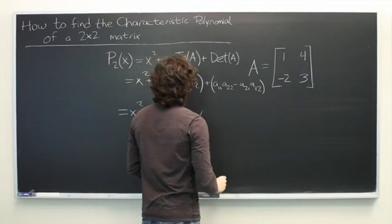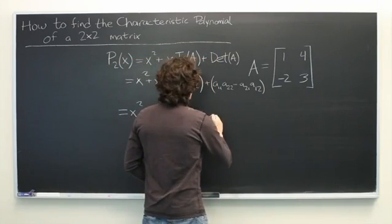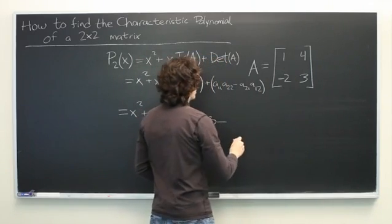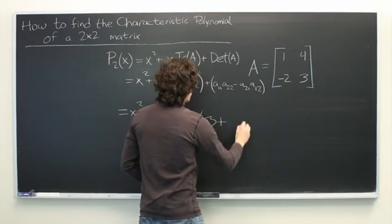Now, for the determinant, 1 times 3 is 3 minus negative 2 times 4 is negative 8. Since we're subtracting, we'll make it positive 8.